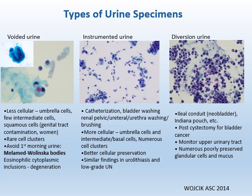Instrumented urine is collected through catheterization, bladder washing, renal-pelvic, ureteral, or urethral washing or brushing. It is generally more cellular and contains umbrella cells, intermediate and basal cells, and clusters. However, similar findings can also be seen in benign urolithiasis and low-grade urothelial neoplasms.